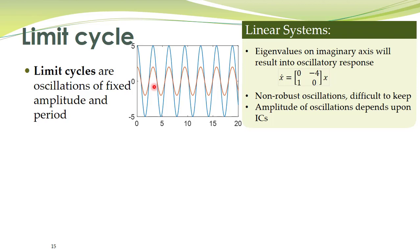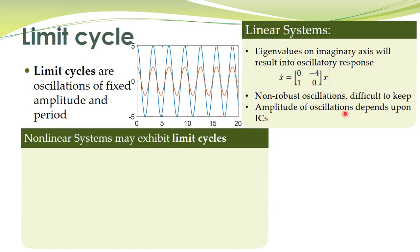These oscillations will either decay down to the origin or grow to become very large. That is the meaning of non-robust oscillations, and they are difficult to maintain. The amplitude also depends upon initial conditions. In contrast, in nonlinear systems you can have sustained oscillations which are robust, and the amplitude of these oscillations will be independent of initial conditions.